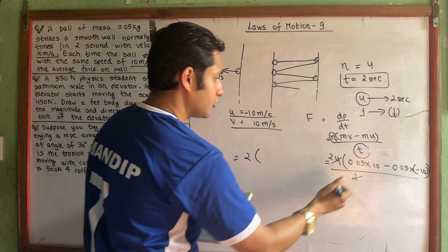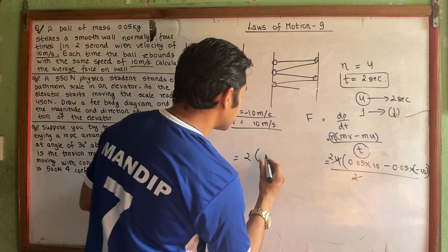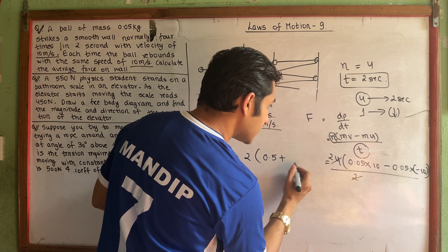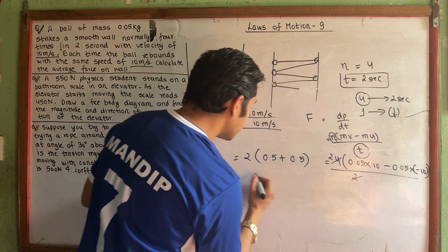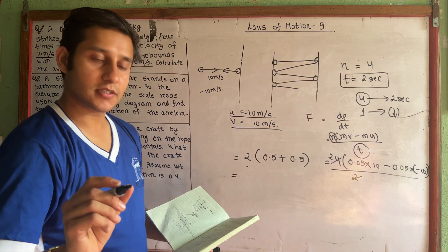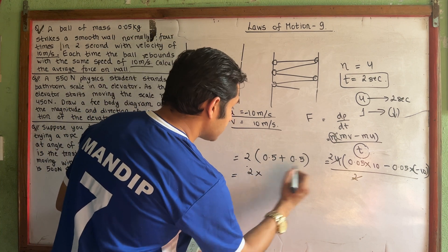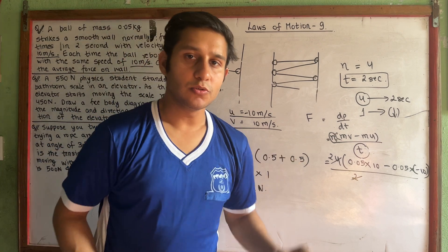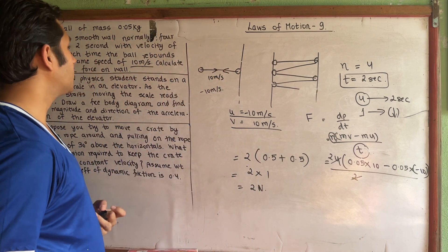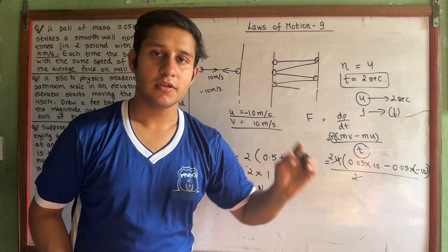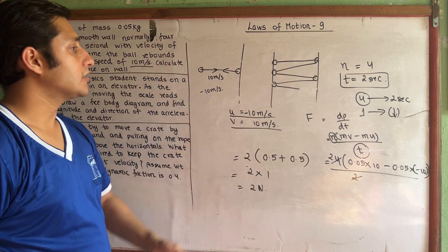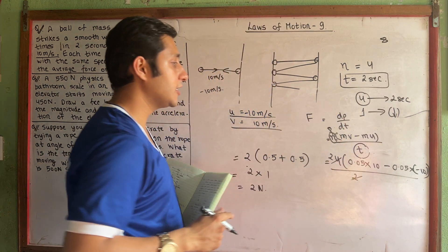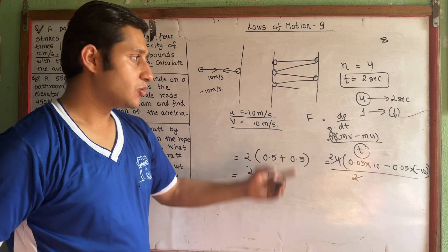So 0.05 into 10 minus into minus — plus. This was 0.5 plus, minus into minus plus. So we get 2 Newton. So 2 Newton is the average force on the wall.